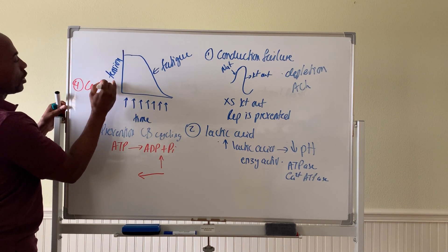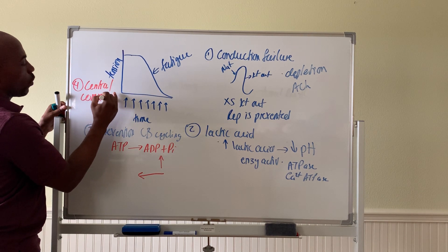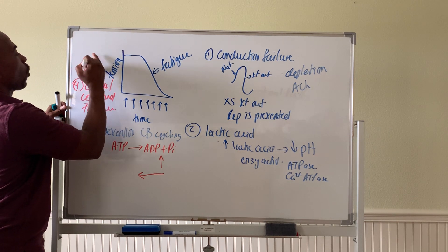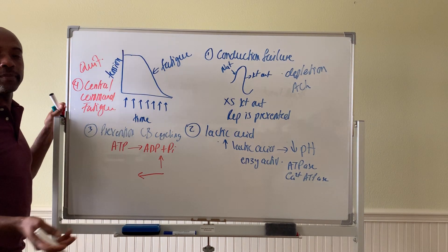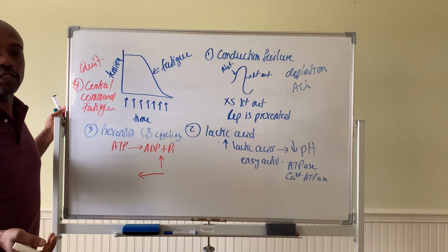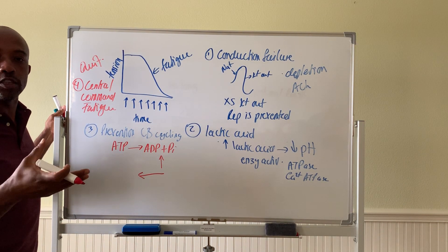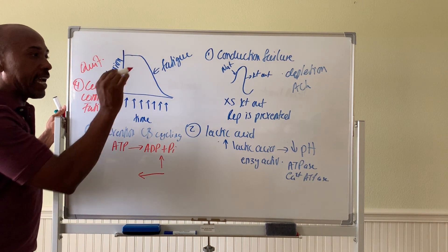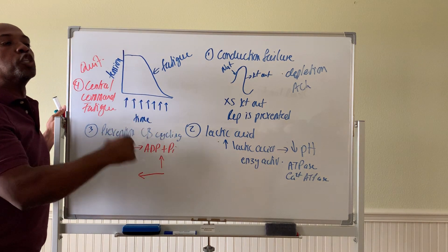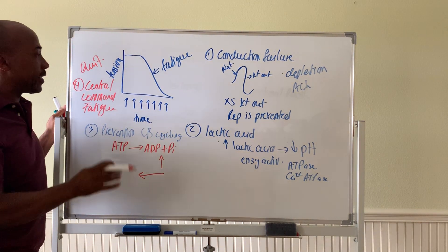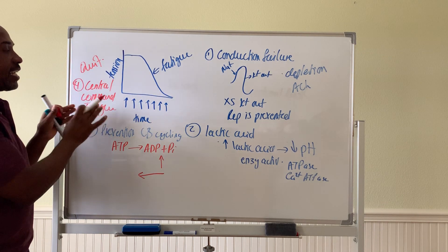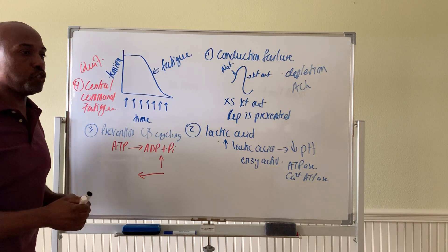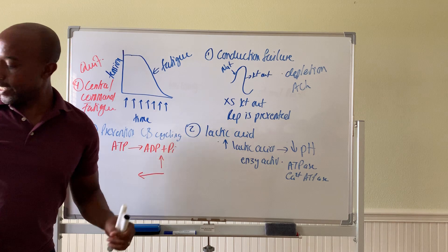The fourth factor is what we call central command fatigue. This is when you quit before you begin — you go to the gym and you're out in two minutes because you tell yourself you're tired and don't feel like it. You're not sending action potentials down to the NMJ to activate the muscles. The muscles are fine, but you're not. That's called central command fatigue, and it's actually the most common way we fatigue. So those are four ways your muscles can become fatigued.